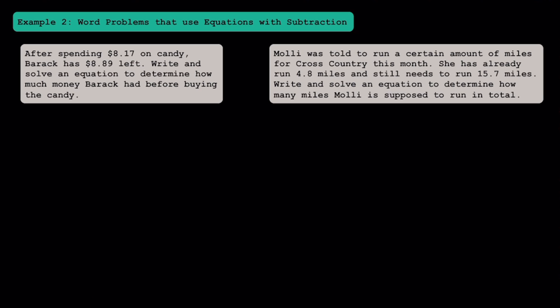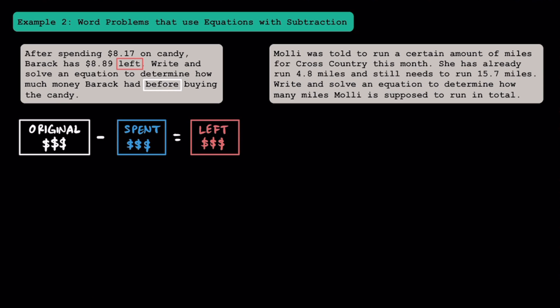After spending $8.17 on candy, Barack has $8.89 left. Write and solve an equation to determine how much money Barack had before buying the candy. A key word is 'left,' meaning he spent some money or subtracted some amount to have this amount afterwards. Another key word is 'before,' reminding us that we use equations to work backwards. Starting with the original money Barack had, then subtracting the money spent on candy, this equals the money he has left — $8.89. I'll use the variable D to represent the dollars Barack had before buying candy, minus $8.17, equals $8.89.